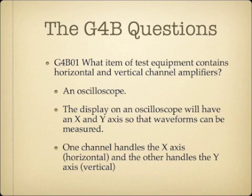What item of test equipment contains horizontal and vertical channel amplifiers? The answer is an oscilloscope. The display on an oscilloscope has an X and a Y axis so that waveforms can be measured. One channel handles the X axis, which is the horizontal, and the other handles the Y axis, which is the vertical.